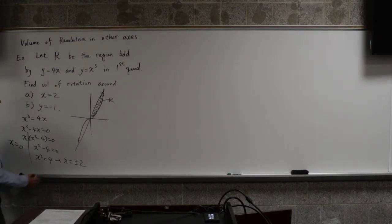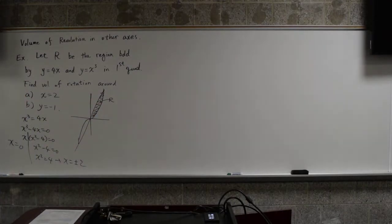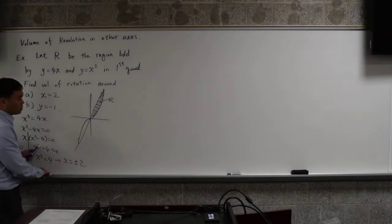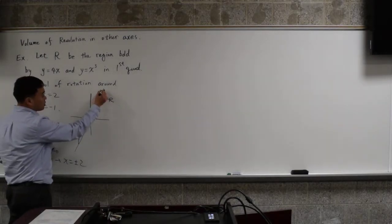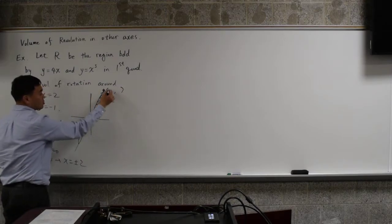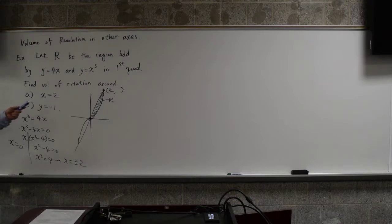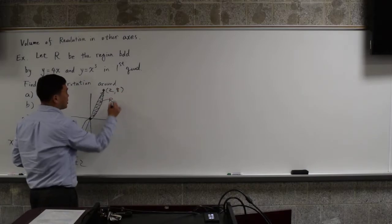So we know that they meet at negative 2, 0, and 2. But since we are only interested in the first quadrant, we just need these two coordinates. This one is 0, 0. What is this one? This is what comma what? 2 comma, what's the y coordinate? 8. How do you get 8? You plug it in. Yeah, you plug in 2 into either one of them. They both give you 8, so that's 2 comma 8.